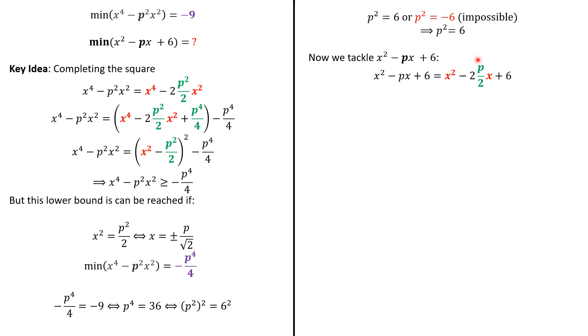So, we will add the square of p/2 which is p²/4 and we just subtract the same to keep both sides equal. And we have our square here.